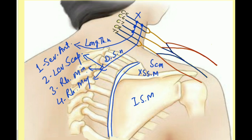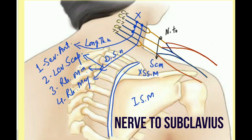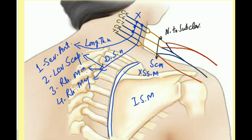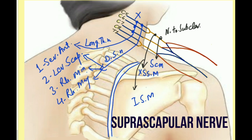The next muscles in sequence — subclavius, supraspinatus, and infraspinatus — will be supplied by branches coming from the upper trunk of the Brachial Plexus. From the upper trunk, we get a branch called the nerve to subclavius, which supplies only the subclavius muscle. The second branch, with root values C5 and C6, is the suprascapular nerve, which supplies supraspinatus and infraspinatus.